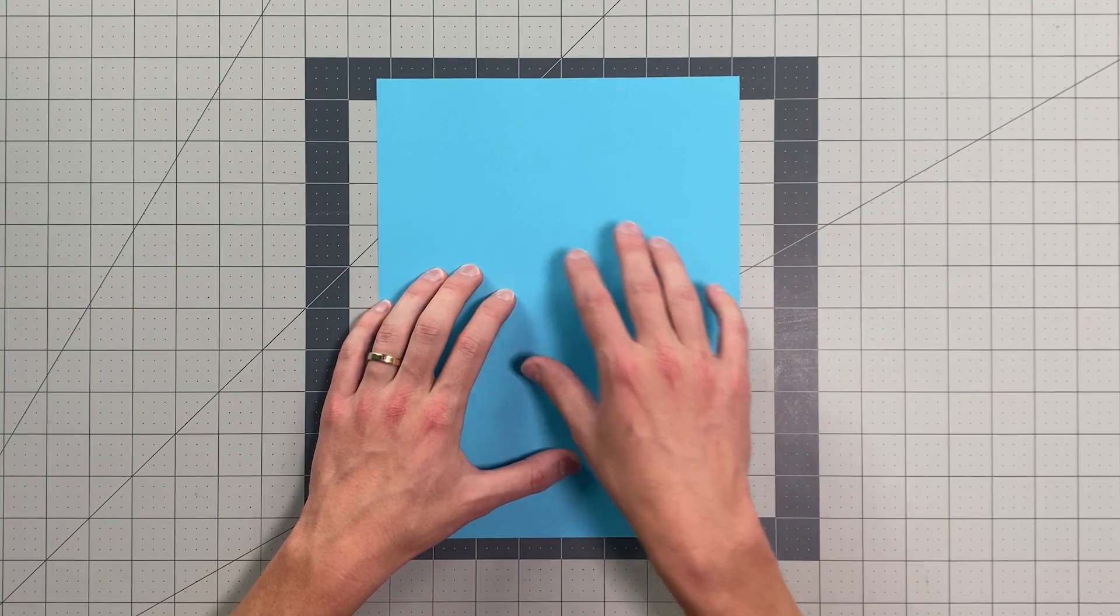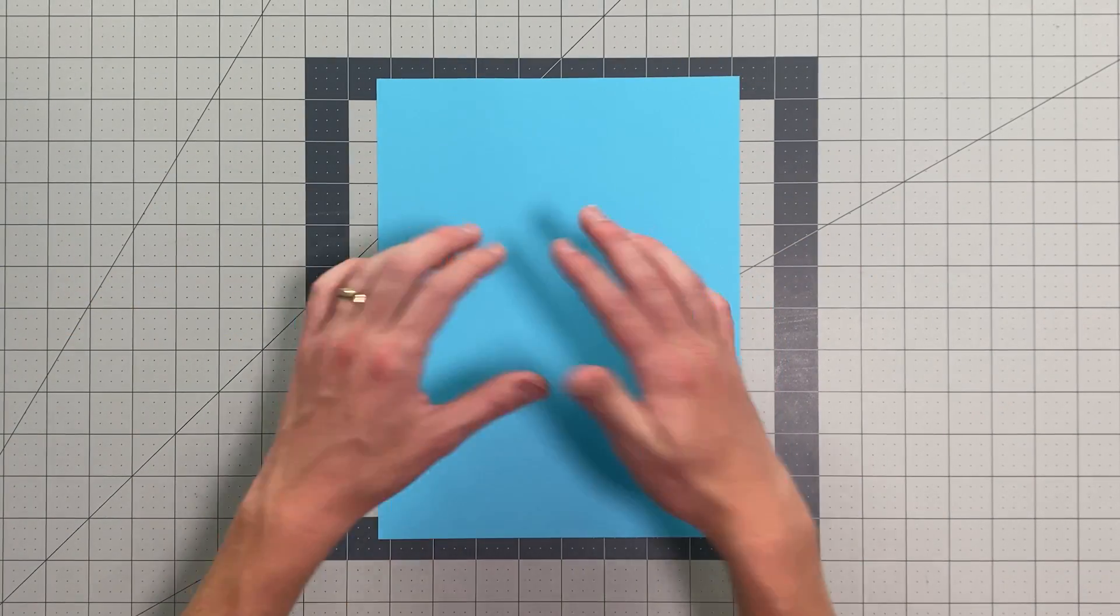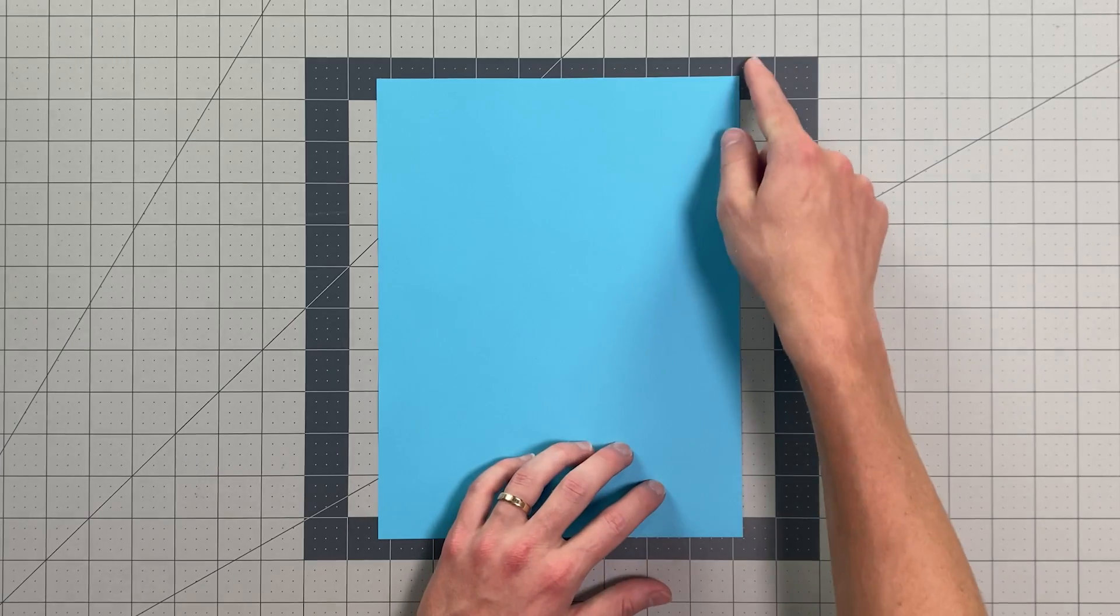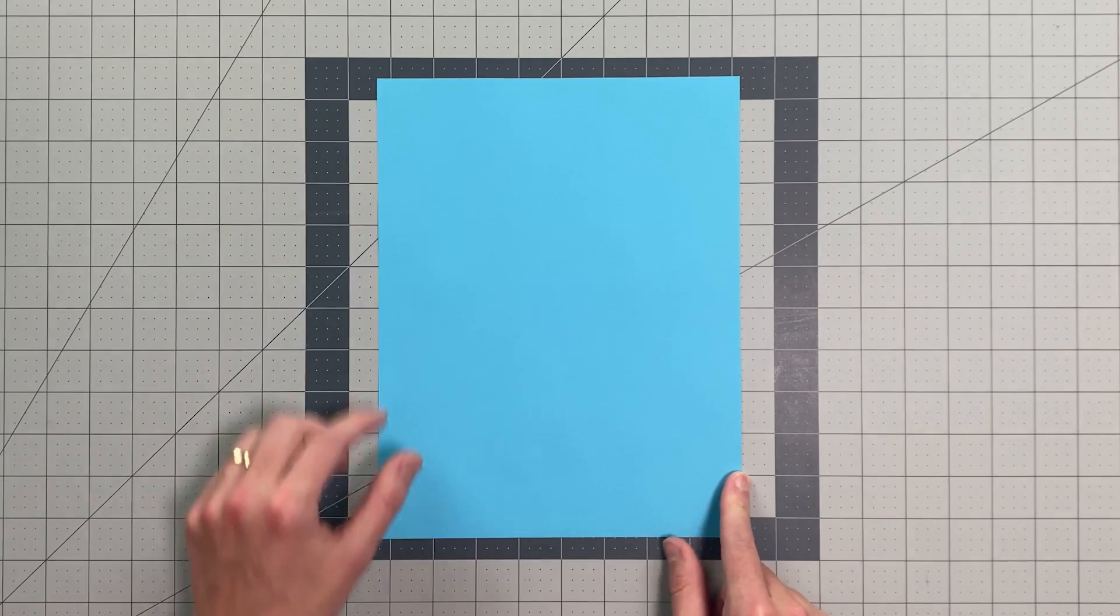All you will need in order to fold Brigand is a sheet of 8.5 by 11 inch paper or A4 paper, and we're going to begin by folding this edge here to this edge over here.